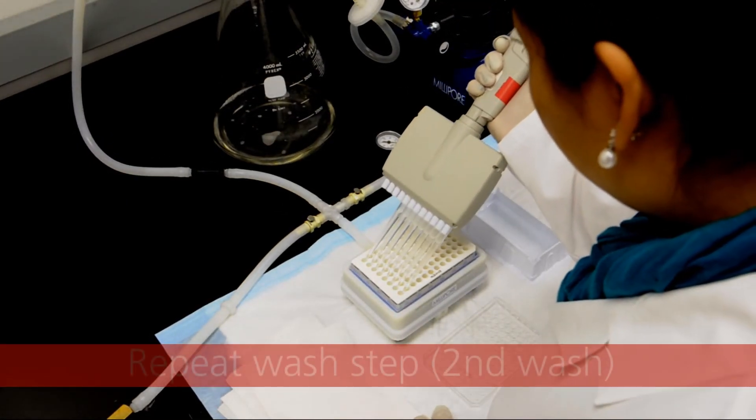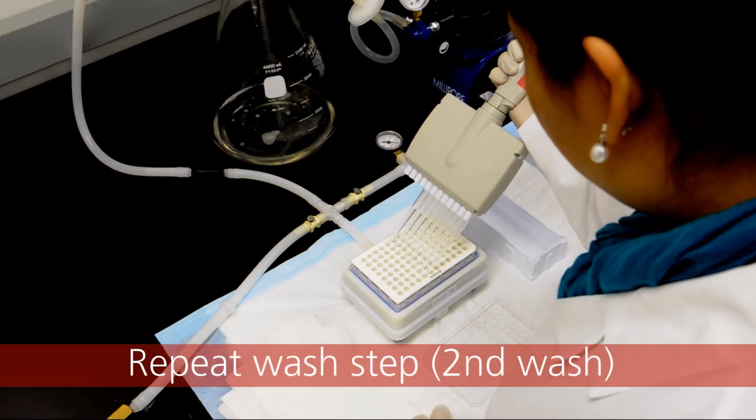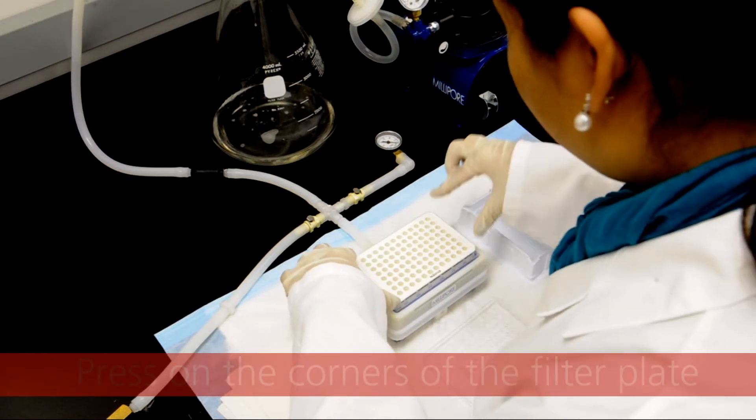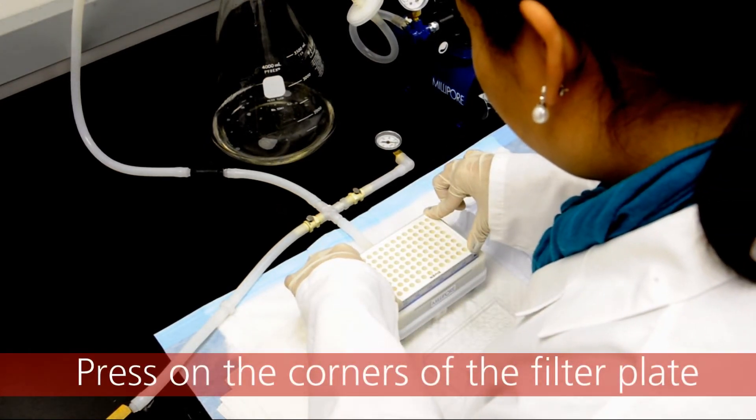Wash the plate a second time by pipetting 150 microliters of wash buffer into each well. Turn on the vacuum manifold and evenly apply pressure to the outer four corners of the plate.